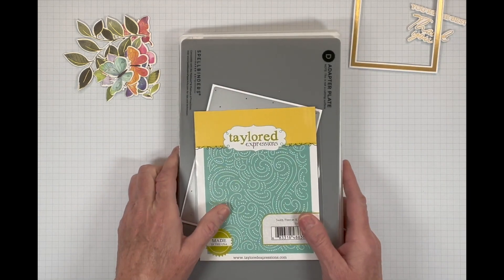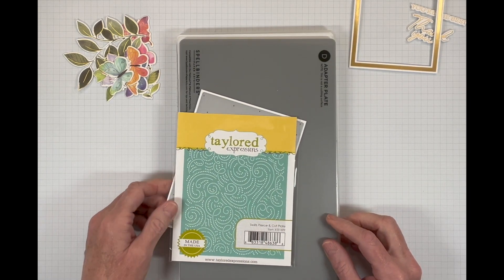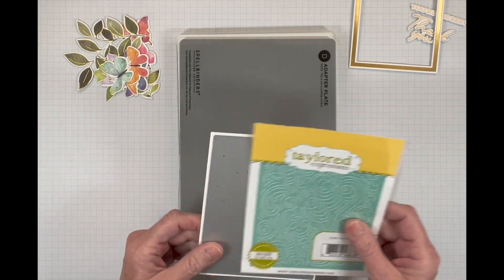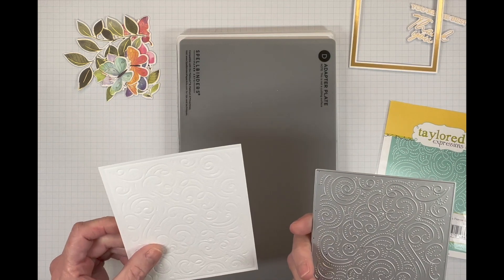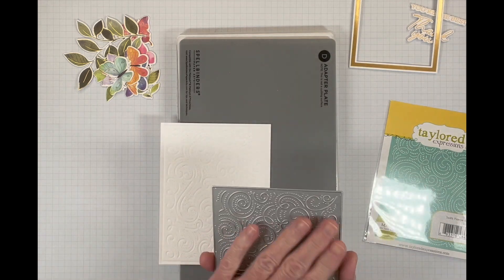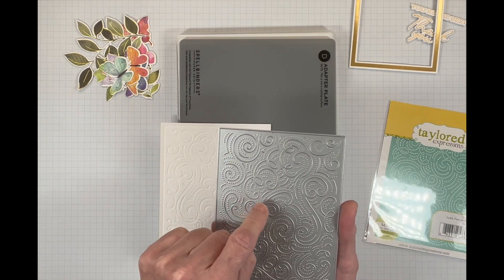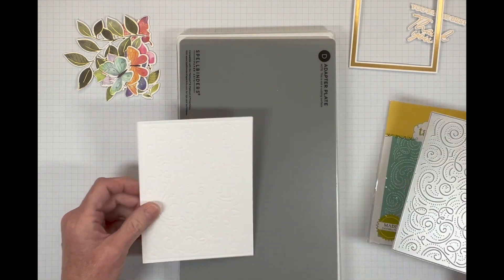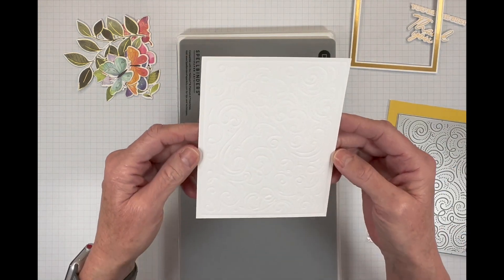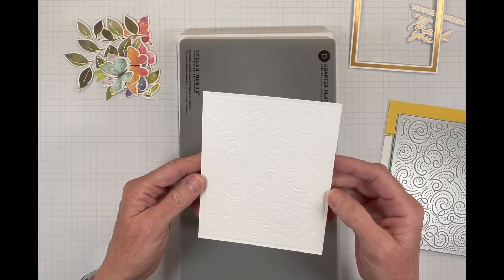For that, I brought in the tailored expressions swirls, pierce and cut plate. And I love this. This is so pretty. So if you use it, you can actually cut the image and it doesn't cut anything out, but it does give you kind of cut lines on your swirls. And I didn't want that. I just wanted it impressed in my paper. So I used my embossing mat.